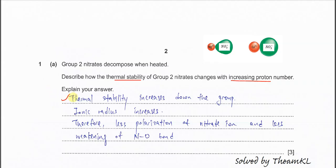So why is it hard to decompose? Because going down the group, the ionic radius increases. The ionic radius of calcium ion is larger than magnesium ion; strontium is larger than calcium and magnesium. You need to explain that ionic radius increases, and therefore there is less polarization of the nitrate ion. When the Group 2 cation is getting larger, it is less able to distort the electron cloud of the nitrate.